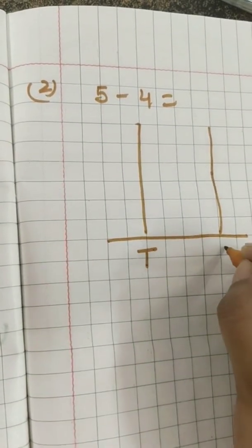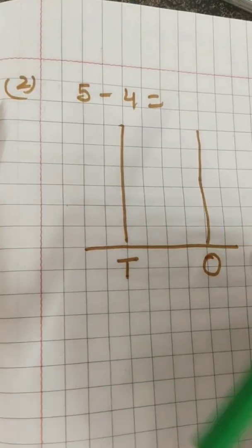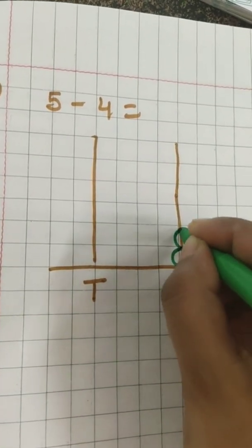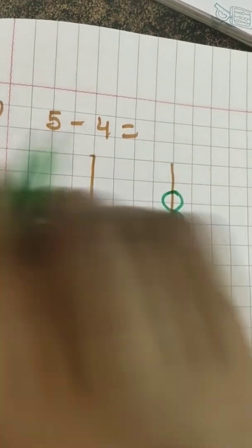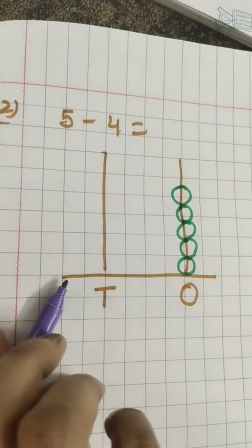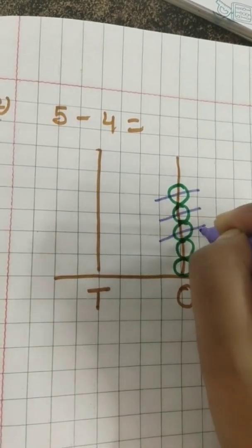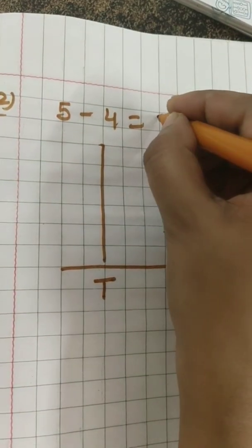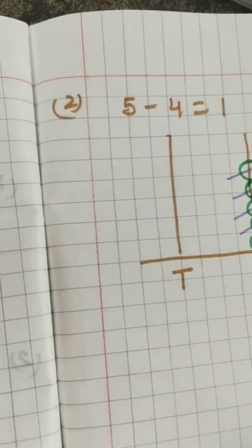T for tens and O for ones. And how many balls ma'am is going to draw? She will draw five balls. One, two, three, four and five. And how many balls we have to cross? Four balls. One, two, three and four. How many balls are left? Only one. And that is our answer.